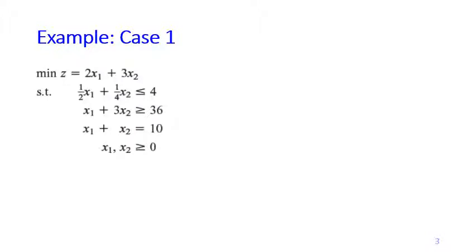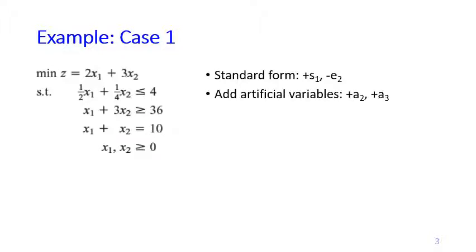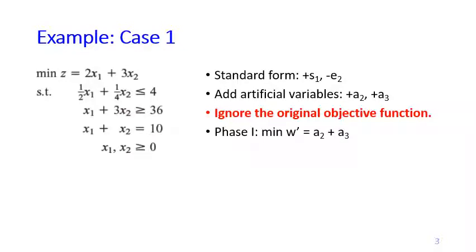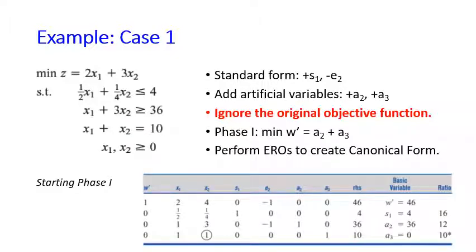Here is an example LP where we will see that the optimal table falls into case one at the end of phase one. As usual, we transform it into standard form: add s1 for the first constraint, subtract e2 for the second constraint, add artificial variables a2 and a3, and ignore the original objective function. We replace it with the phase one objective: minimize w prime = a2 + a3. Then we perform row operations to create a canonical form BFS.